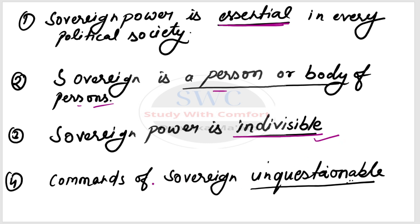The next key point is that the commands of the sovereign — commands backed by sanctions — are unquestionable. The masses, the people of political society, the citizens, cannot question the commands of the sovereign authority on grounds of right or wrong, justice or injustice. Because decisions are taken by a superior person, the inferior — the general public — must habitually obey them.